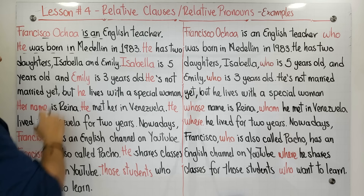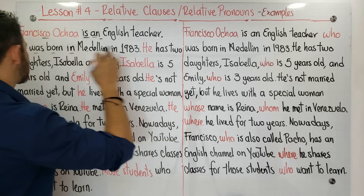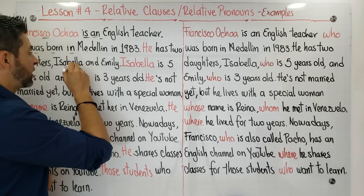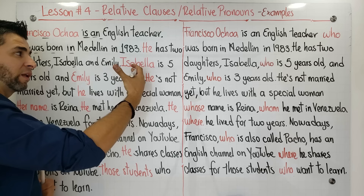'He was born in Medellín in 1983.' Look at that other independent clause — subject, verb, and complement. Then: 'He has two daughters, Isabela and Emily.' Pay attention to what we have here.